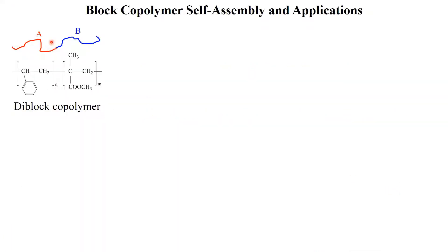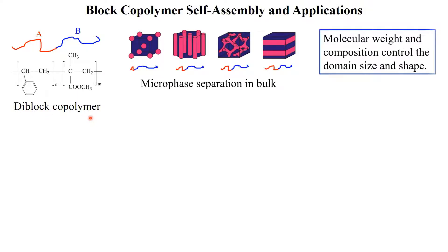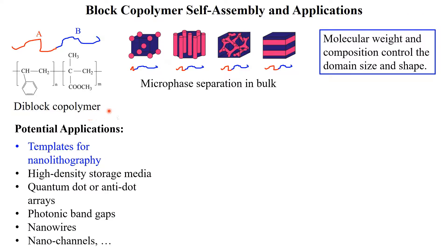Block copolymers consist of chemically distinct polymer chains, or blocks, covalently bonded together. Here shows the most commonly studied polystyrene-polymethylmethacrylate diblock copolymer due to their spontaneous self-assembly into microphase-separated domains with uniform size ranging from a few to tens of nanometers, determined mainly by their molecular weight.